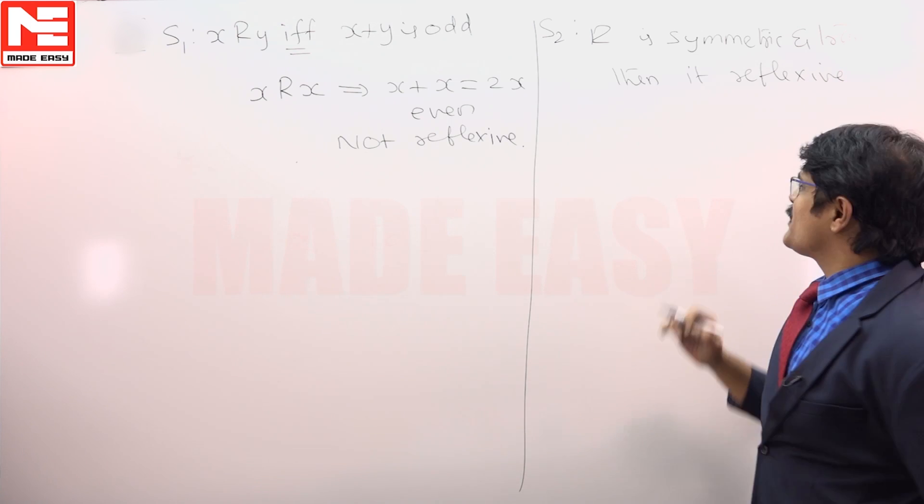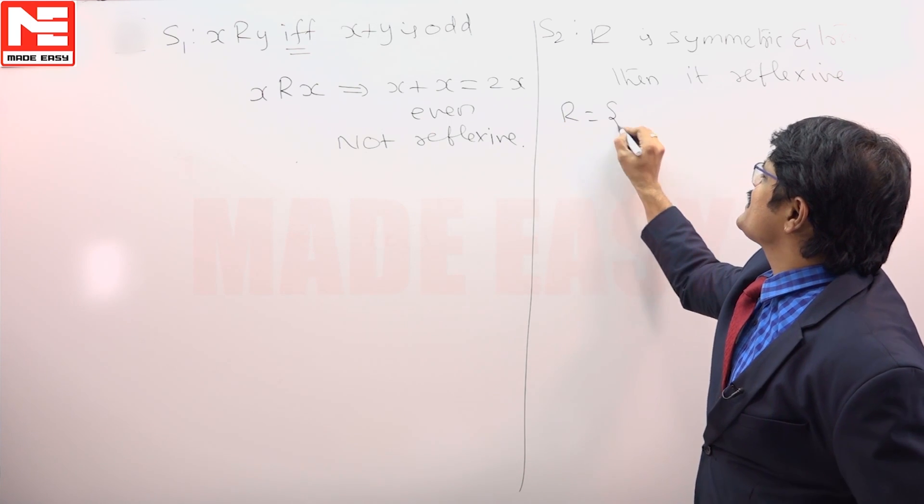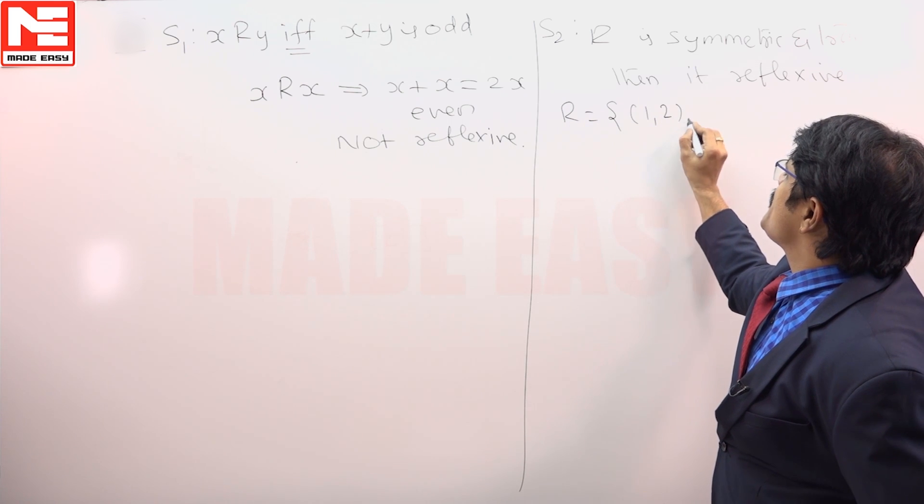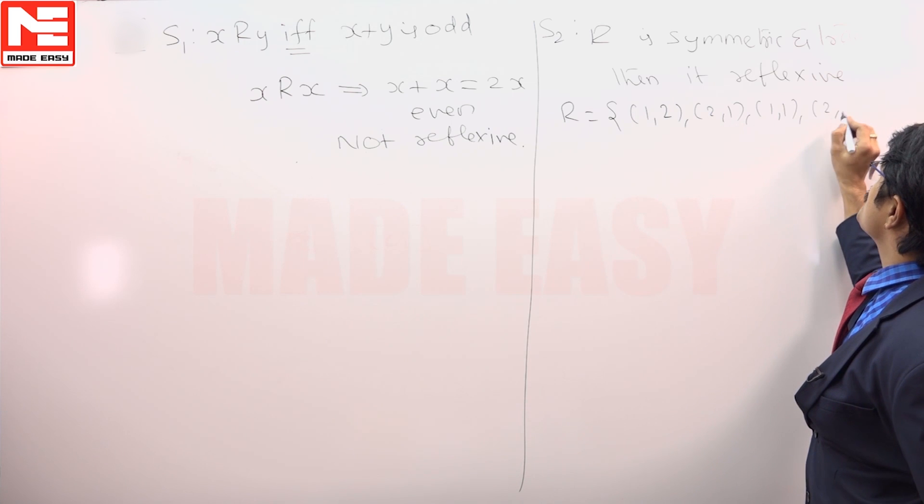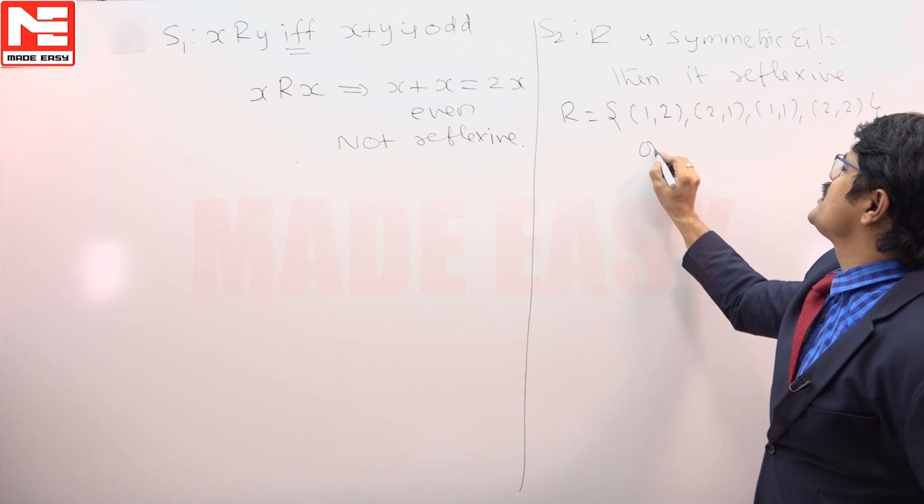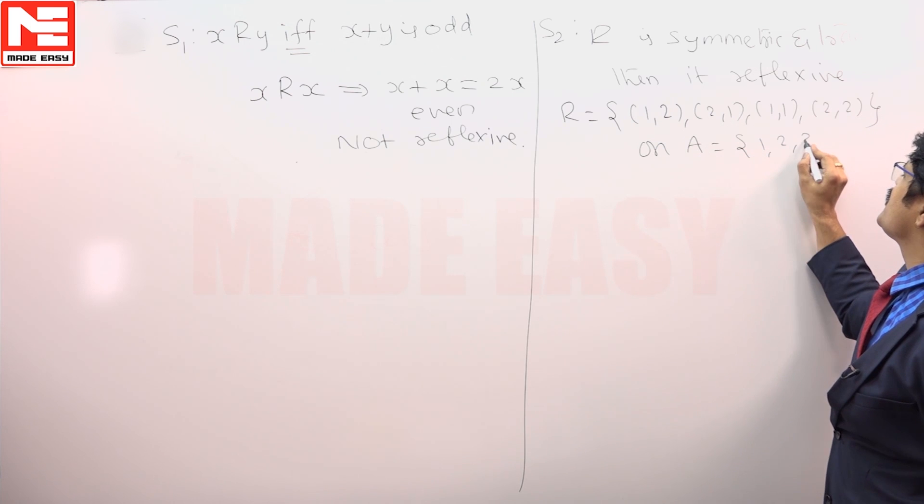Now, when this particular statement is given, let us take one example for this: (1,2), (2,1), (1,1), and (2,2) on set A equals {1, 2, 3}.